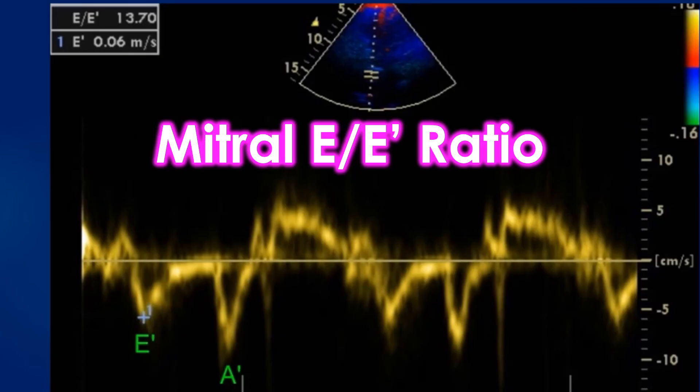In this case, the ratio is given as 13.7. It may be noted that the Nyquist limit for the Colored Tissue Doppler is 0.16 m per second in this image, while it is 0.65 m per second in the following image for Colored Doppler Imaging. This is because the blood flow velocities are much higher than the velocity of tissue movement with systole and diastole.